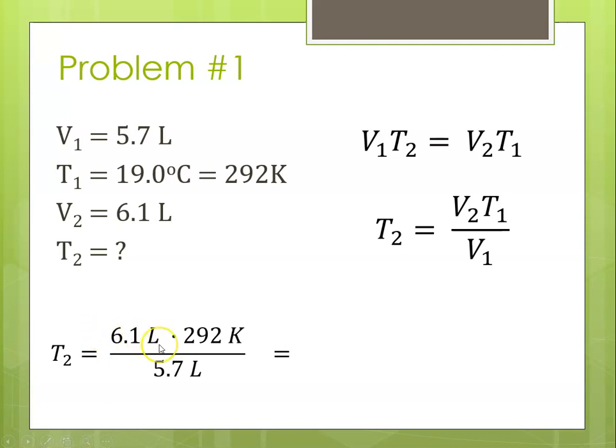V2 is 6.1 times our T1, which is 292 Kelvin, divided by our V1, which was 5.7. Now we have to cancel our units. Liters cancels out, we're solving for Kelvin. Plugging into our calculator, 6.1 times 292 divided by 5.7, we get this number.